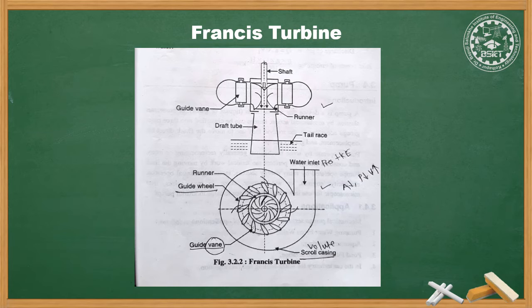The water loses some pressure energy in the spiral casing to maintain its speed. It then passes through guide vanes where it is directed to strike the runner blades at an optimum angle. During flow through the runner, pressure and angular momentum decrease, imparting a reaction on the runner and transferring power to the turbine shaft, which is coupled to a generator. At design condition, water leaves the runner axially and exits through the draft tube, which acts as a diffuser to recover maximum energy from the flowing water.